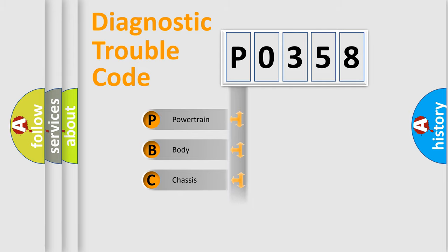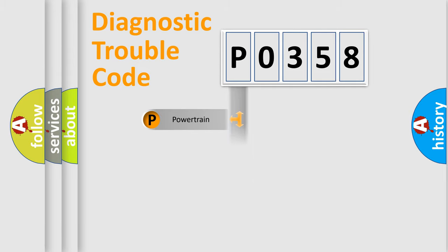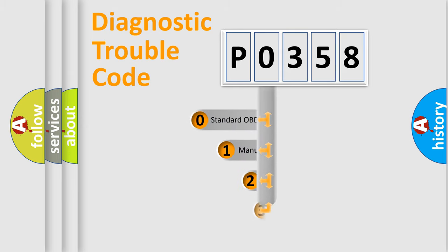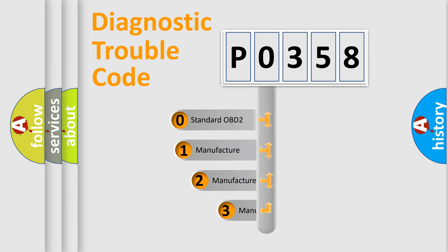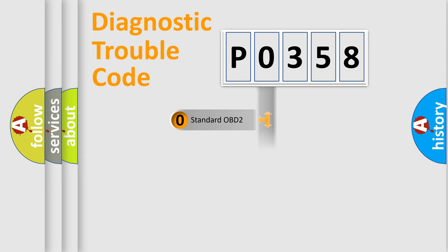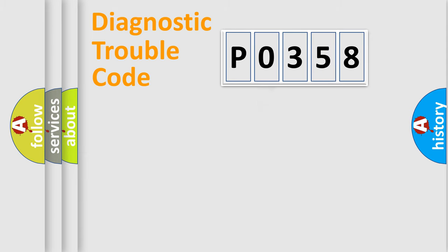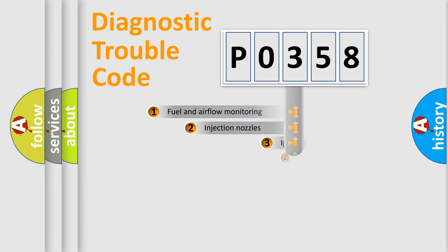Powertrain, body, chassis, network. This distribution is defined in the first character of the code. If the second character is expressed as zero, it is a standardized error. In the case of numbers 1, 2, or 3, it is a manufacturer-specific expression of a car-specific error.